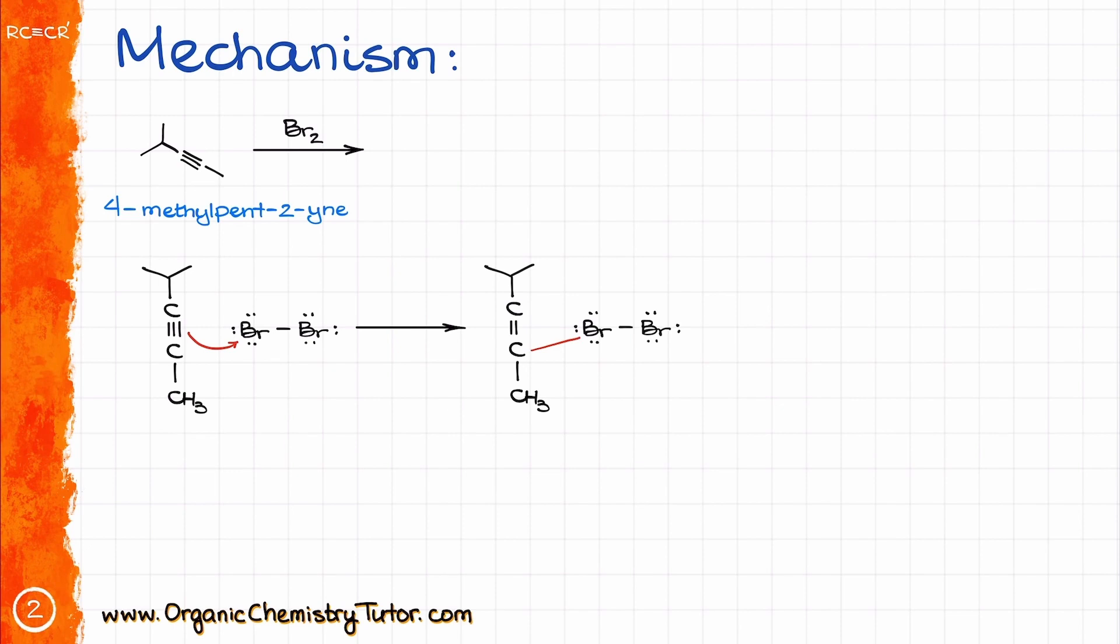Now, this electron exchange is going to make a new carbon-bromine bond. And since bromine cannot accept any more electrons, it has a full octet around it, we'll have to break the bromine-bromine bond like this. And this is going to make a second bromine atom in this step just float away as a separate ion.